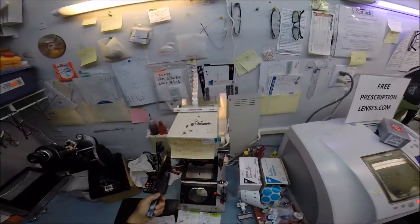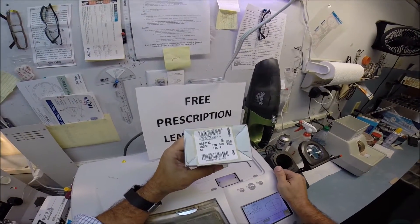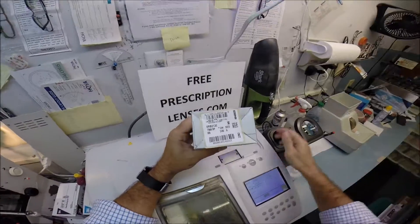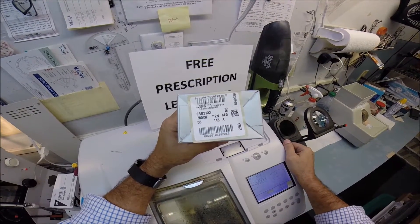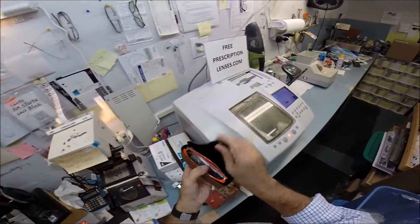Hey Alex in Toronto, Canada. Matthew here with FreePrescriptionLenses.com, and with the help of my GoPro camera, I'm going to show you how I cut prescription lenses for your Ray-Ban 2132 New Wayfarer, color 789 in the 55 eye size. And of course the color 789 is the blue-orange.